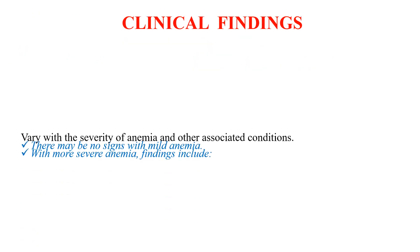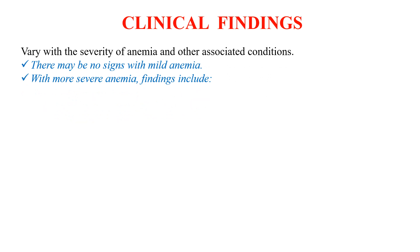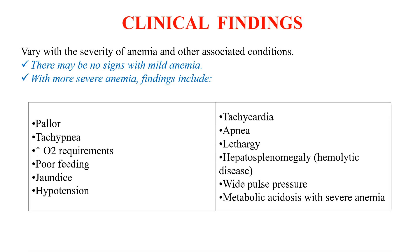When we consider the clinical manifestations of neonatal anemia, manifestation varies with the severity of anemia and other associated conditions. There may be no signs with mild anemia, but with more severe anemia there might be findings such as pallor, tachypnea, poor feeding, jaundice, tachycardia, apnea, lethargy, organomegaly, wide pulse pressure, metabolic acidosis with severe anemia, and also increased oxygen requirement if the infant is on a ventilator or oxygen therapy.